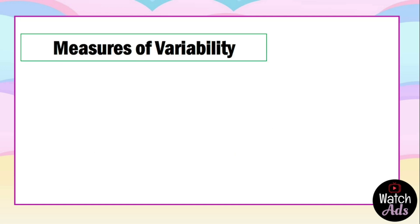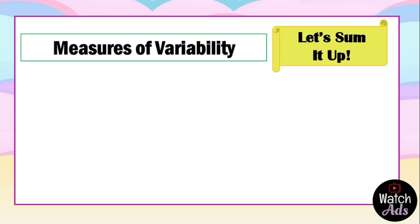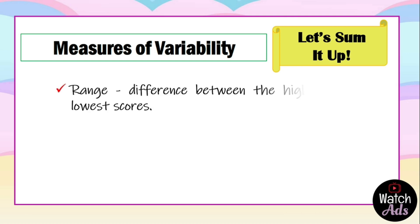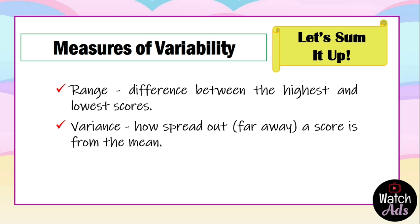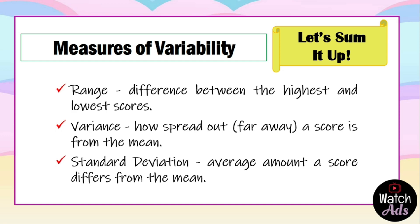Before we end our lesson, let's review the measures of variability. First is the range, which is the difference between the highest and the lowest scores. Second is the variance, how spread out or far away a score is from the mean. And last is the standard deviation, which is the average amount a score differs from the mean. That's the end of this video. If you have any topics you want me to discuss, please write in the comment section below. Thank you for watching.